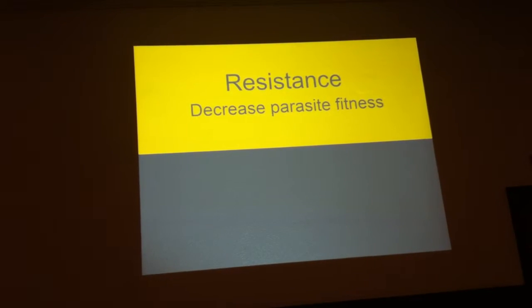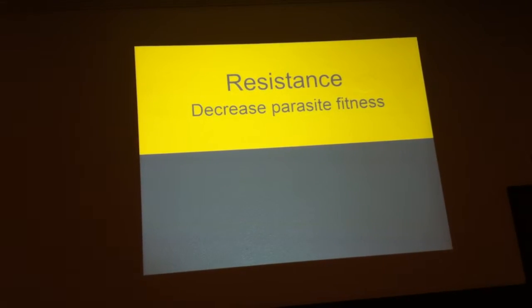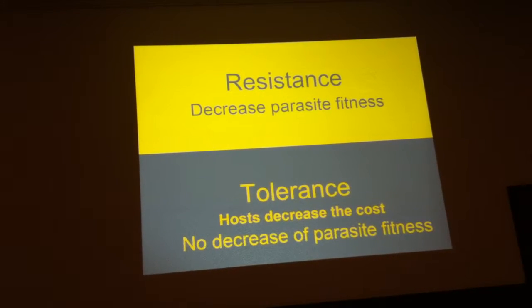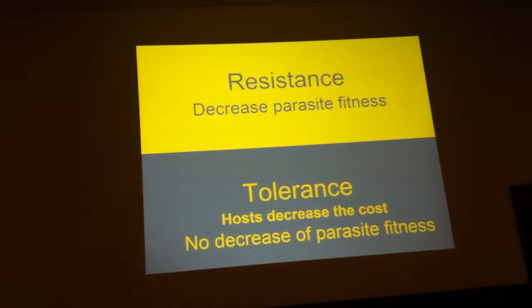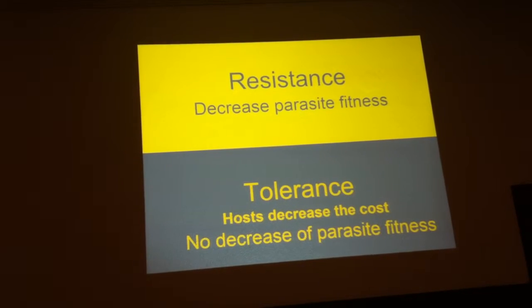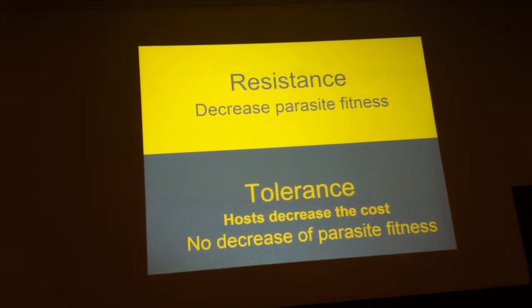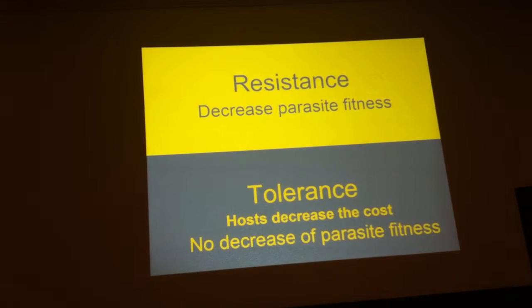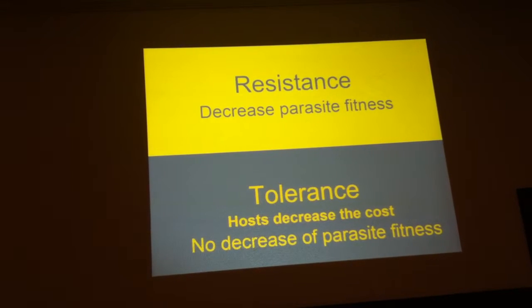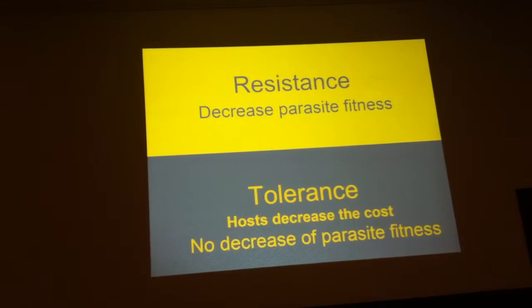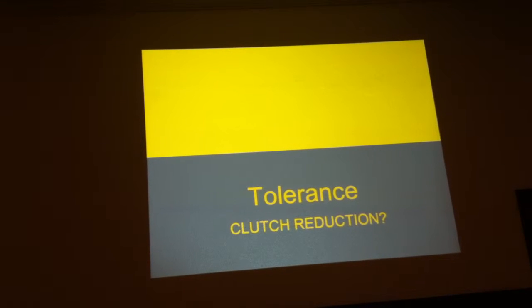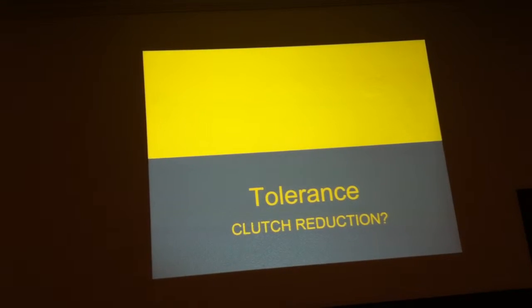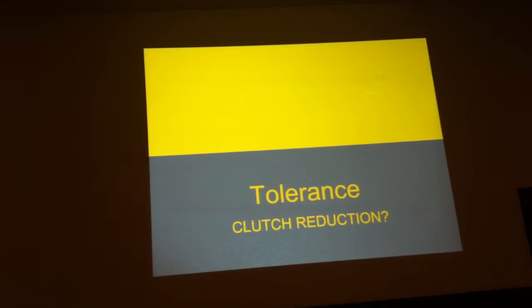However, there are other ways in which hosts can defend. They can, for example, evolve tolerance. In tolerance strategies, hosts are parasitized but they decrease the costs of parasitism. The parasite still gets to reproduce and there is no decrease in its fitness, but the hosts can decrease the costs of parasitism. This is a very poorly explored area in avian brood parasite theory, and for some years there has been floating the idea that one way of tolerating is by evolving a reduced clutch size.